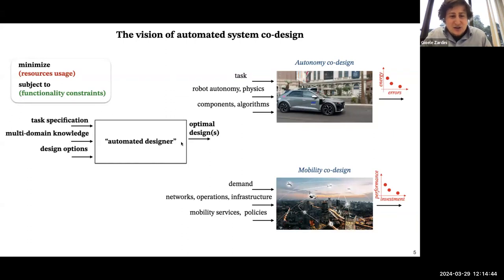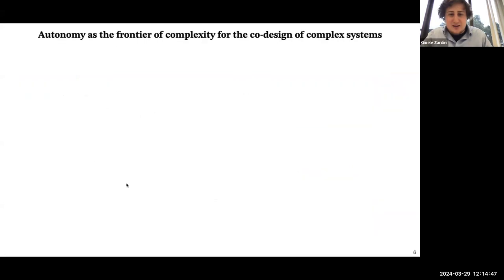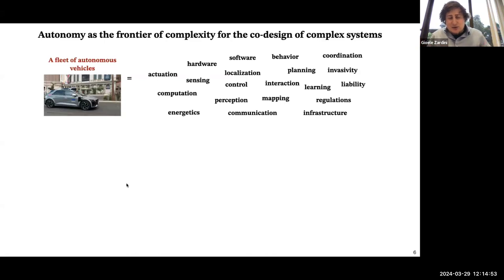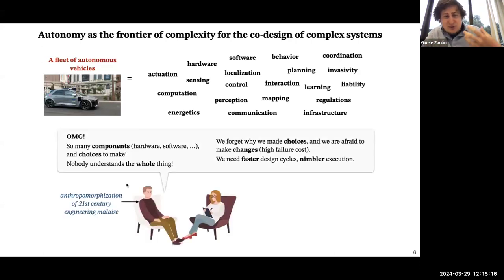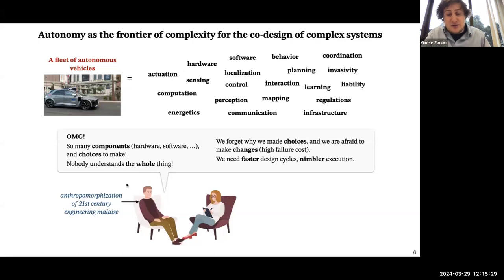Why is it hard to come up with the magic inside this automated designer block? There are at least three reasons. The first is that when designing these complex systems, you need to consider many components at different levels. Imagine designing a fleet of autonomous vehicles — you need engineers thinking about actuation, computation, sensing, control, perception, and planning. You have things at the hardware level, things at the software level, and things in between like liability, regulation, and ethics. The typical reaction is to say there are too many components — and more importantly, I'm afraid to make choices because I don't know the effect of those choices on the system.